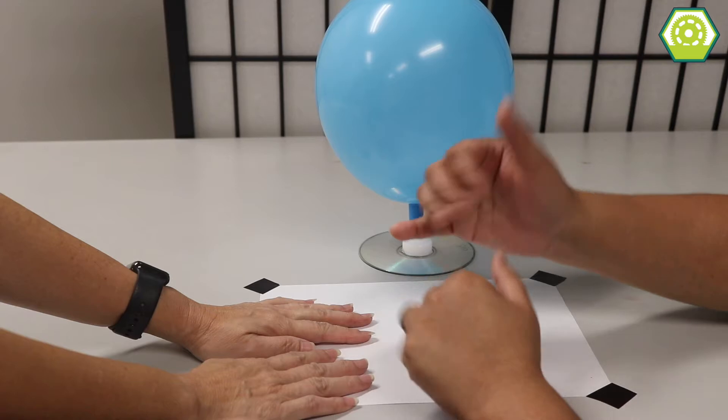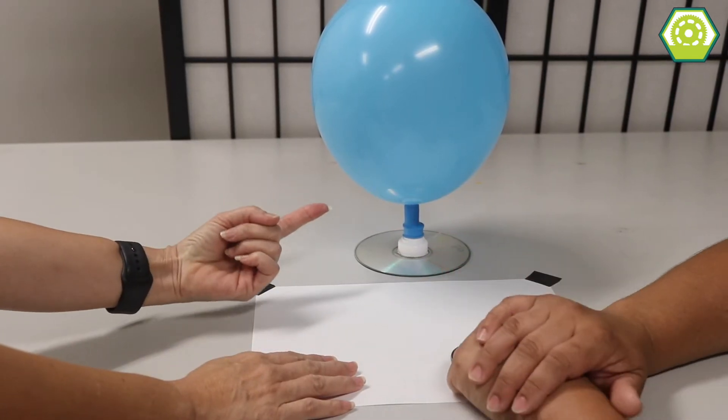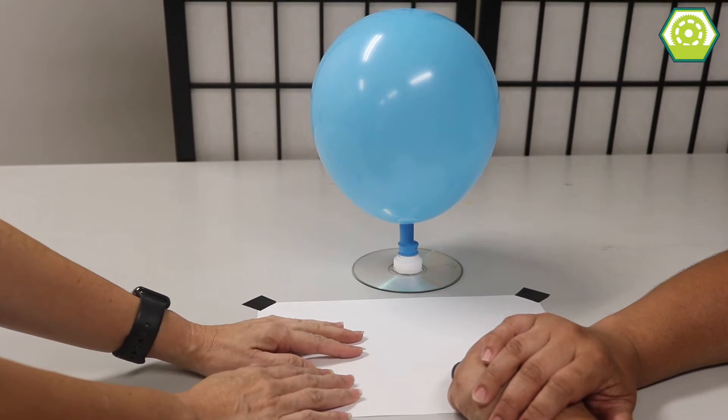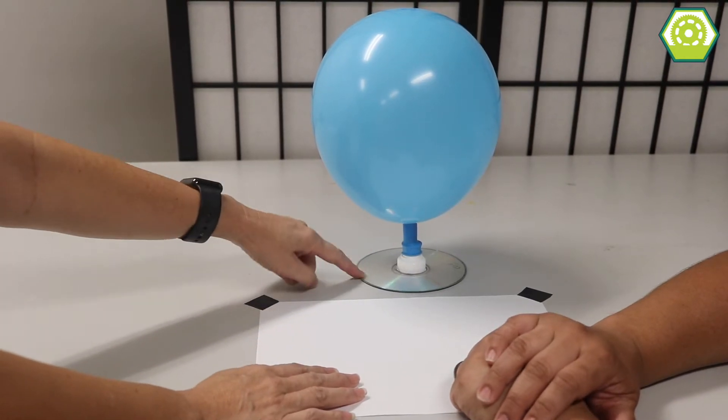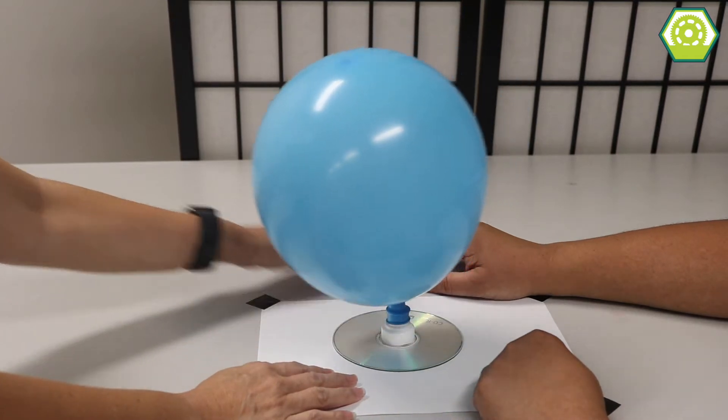Everybody, welcome to Hands On Science. Hey Carl! Hey Mel! Hey, what is this contraption you've got today? It's called a CD hovercraft. Oh cool, CD hovercraft, gotcha. So how does it work?